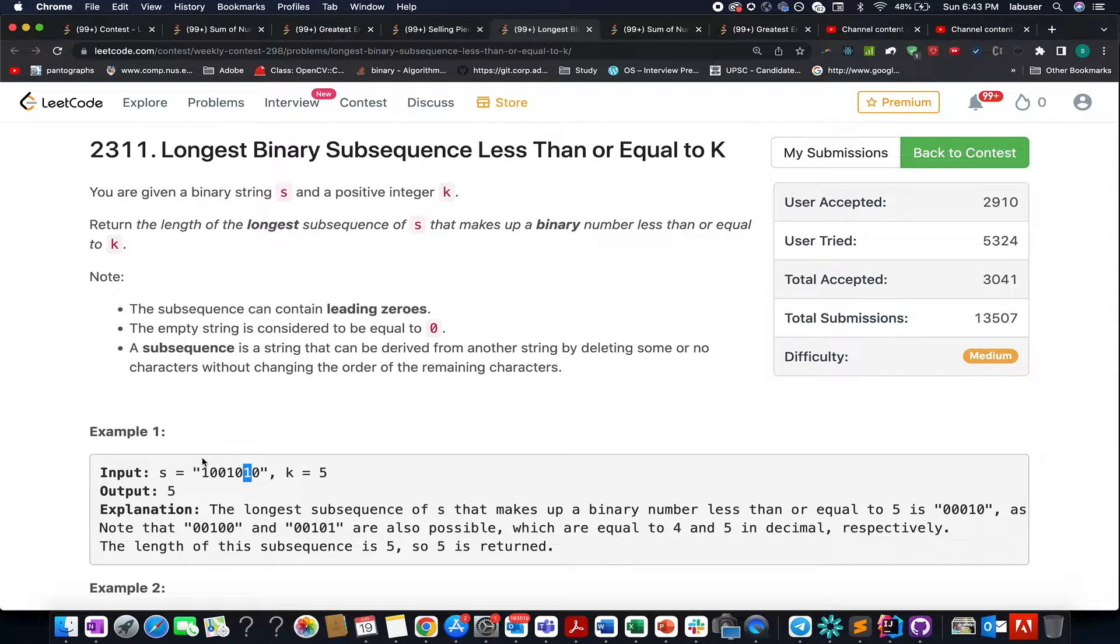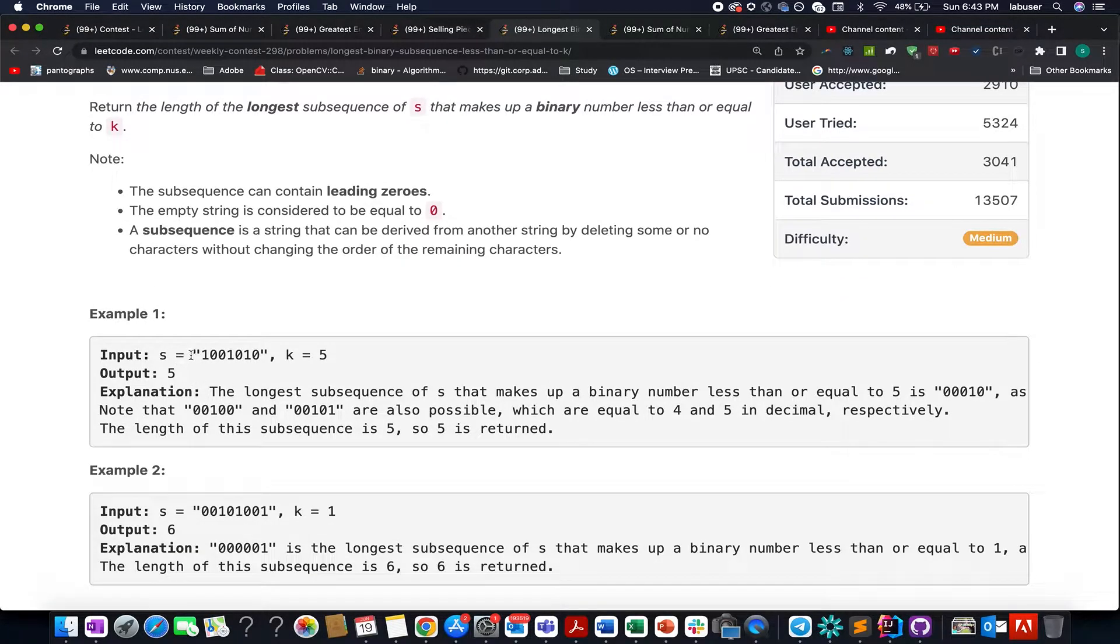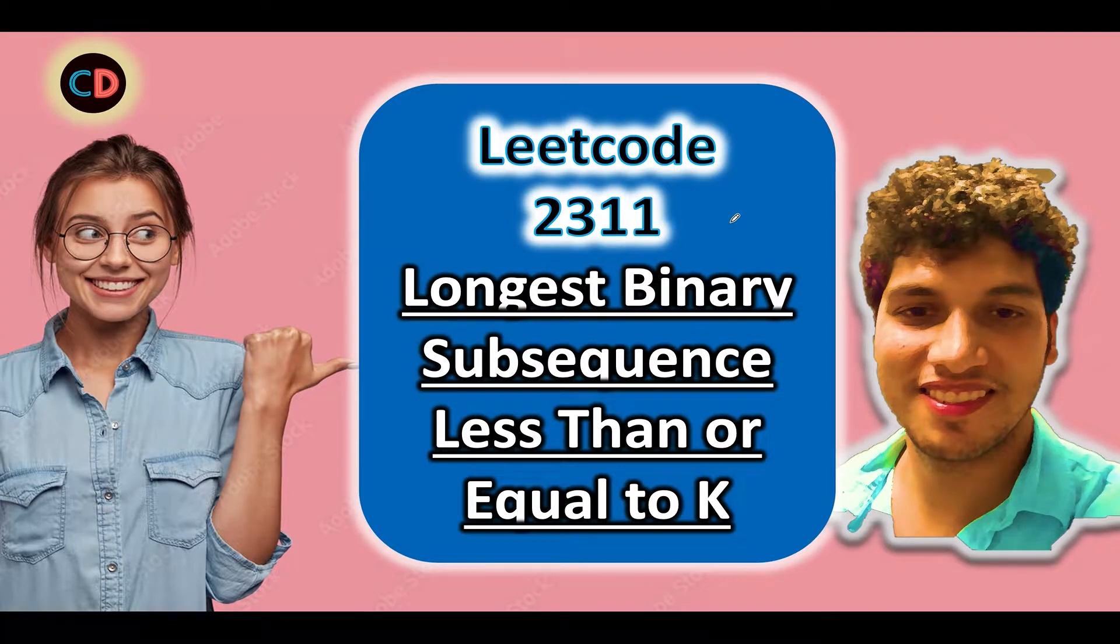We are given an input string with characters in binary format, either 0 or 1, and a value K. We need to identify the longest binary subsequence that is less than or equal to K. The question is self-explanatory. Let's walk through the example and derive the algorithm behind it. LeetCode 2311: Longest Binary Subsequence Less Than or Equal to K.